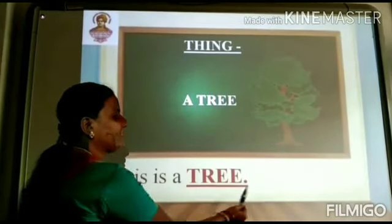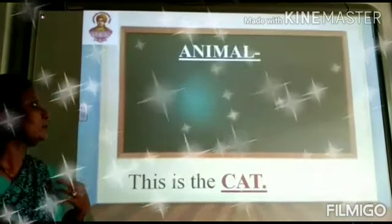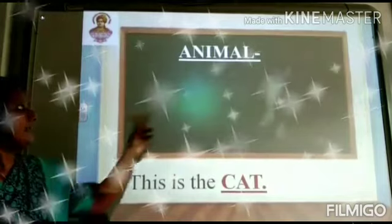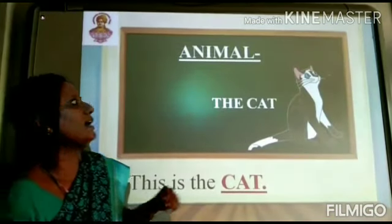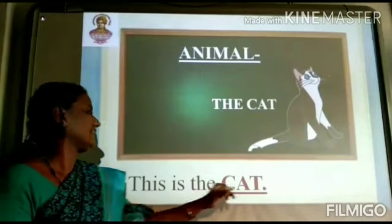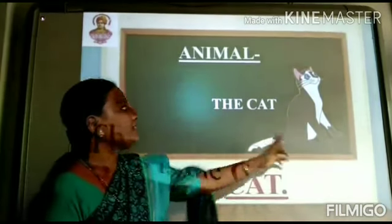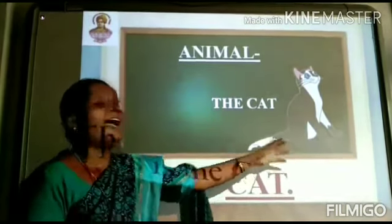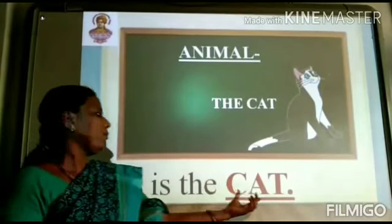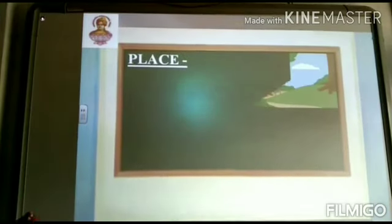This is a tree. Tree is a proper noun — name of a thing. Animal. What is the animal here? Cat. This is the cat. Cat is an animal. It is the name of an animal. Cat is the proper noun.